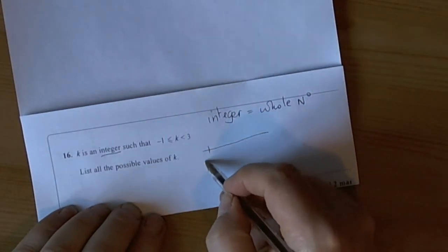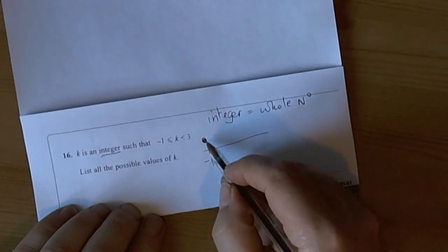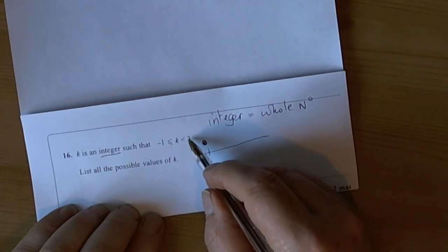So if we start a number line to actually help us see what's going on, it can be equal to minus 1 so we can draw the colored in dot, and it's saying that k has to be less than 3.